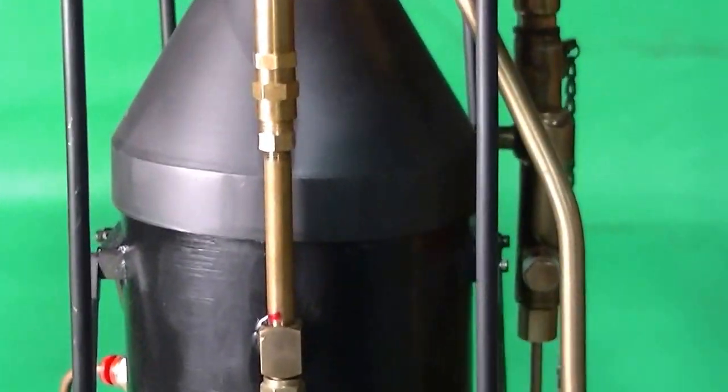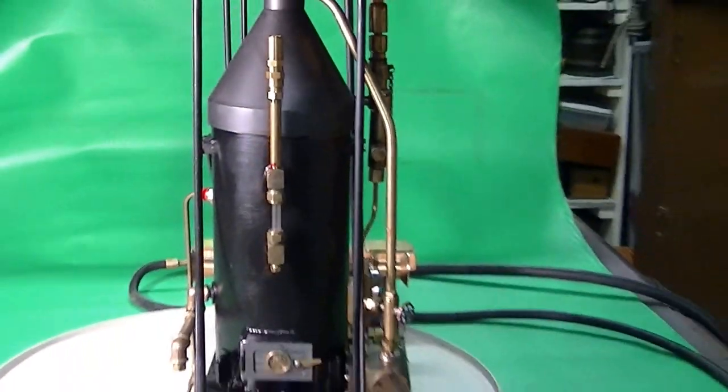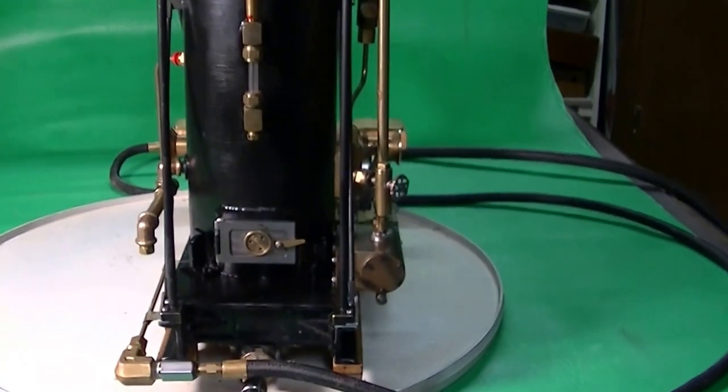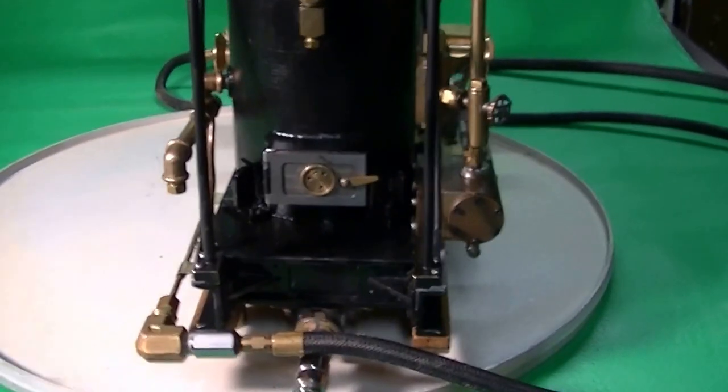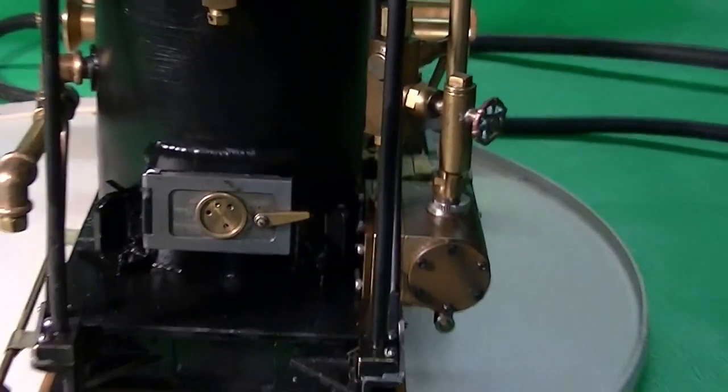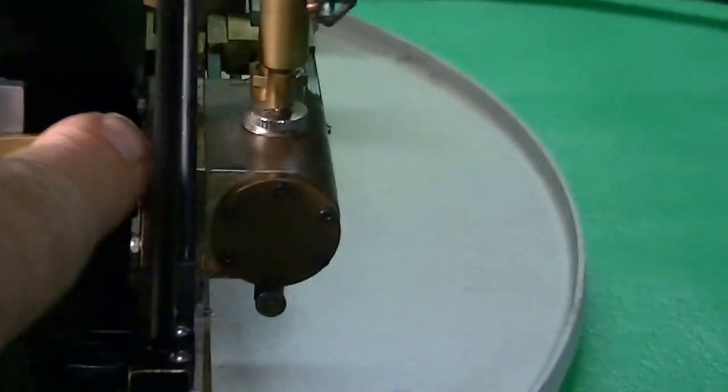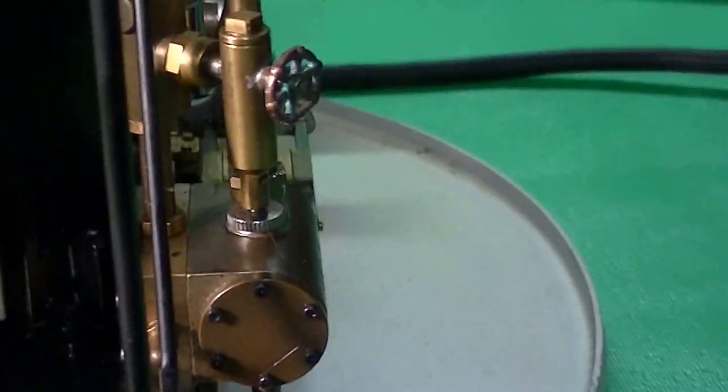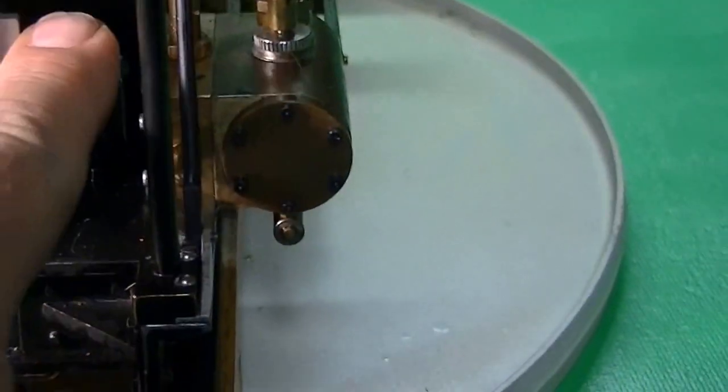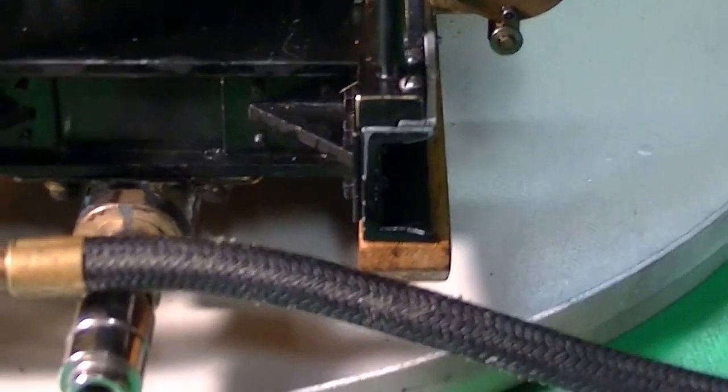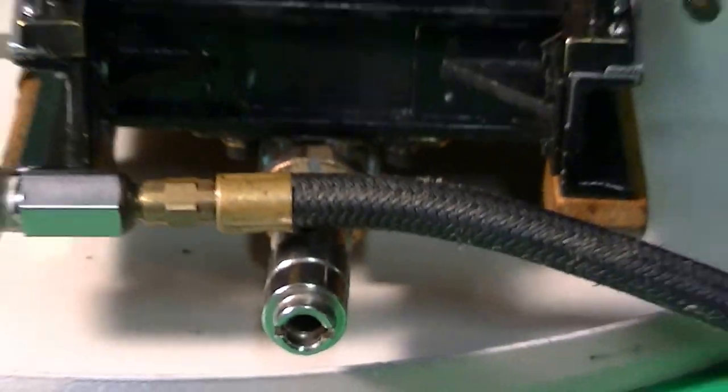In the back of the engine, on the side where the fireman would stand, you got the firebox door. It even has a little working draft door on it that you can adjust. Below that is the burner if you were going to use LP gas - there's a burner coming up underneath the bottom.